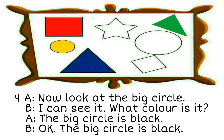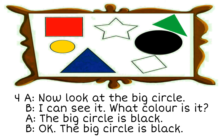4. Now look at the big circle. I can see it. What colour is it? The big circle is black. OK. The big circle is black.